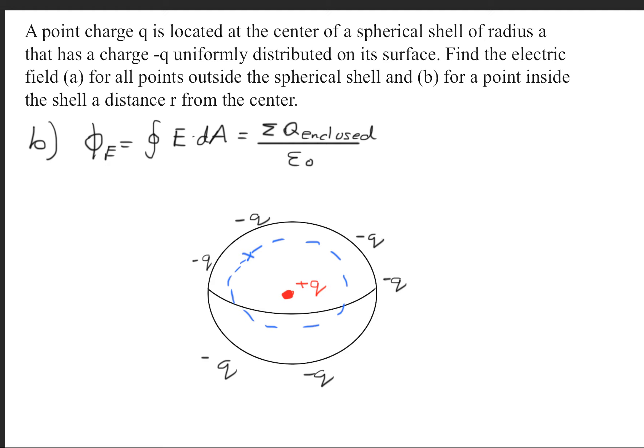We'll go ahead and apply the formula here. We get that E times A is equal to the sum of the enclosed charge. We only have one, so we have a positive Q all over epsilon naught.